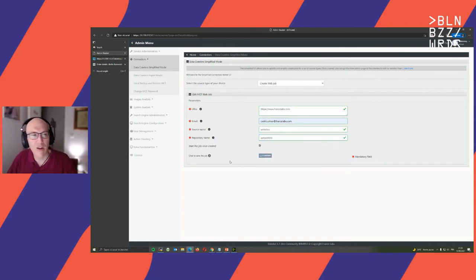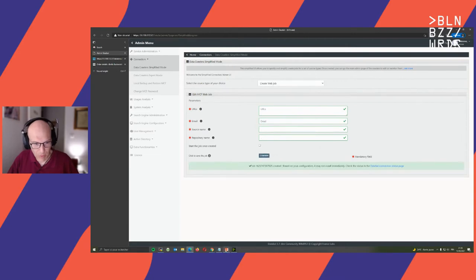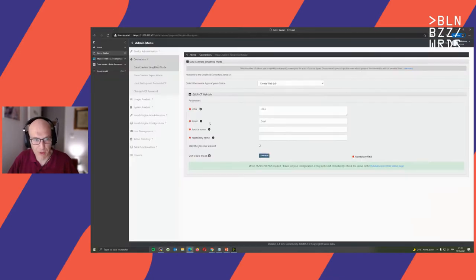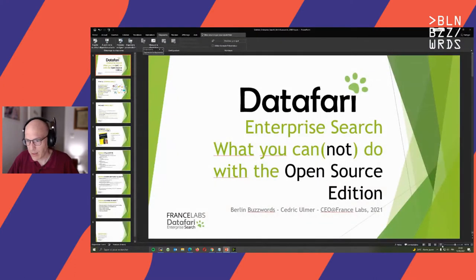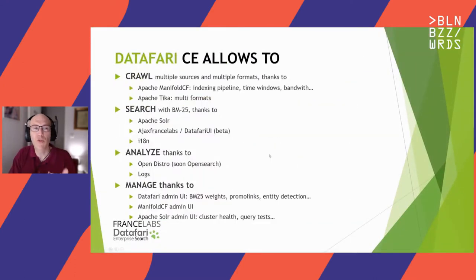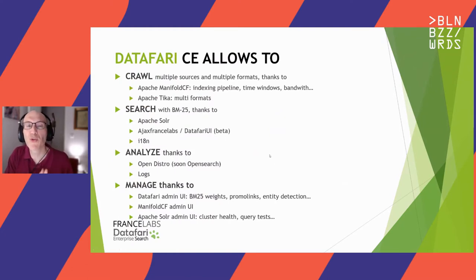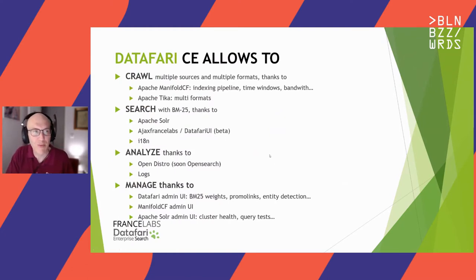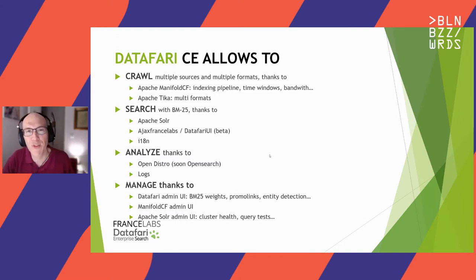While the indexing is going on, let's go back to the presentation. What you can do: you can crawl multiple sources and multiple formats, because this is enterprise search — many systems to crawl. This is feasible thanks to Apache ManifoldCF, led by Karl Wright, where you can manage your indexing pipeline, time windows, the bandwidth of crawling, etc.